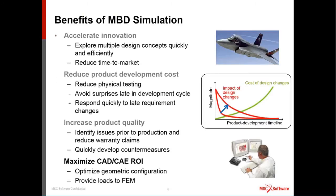Multi-body dynamic simulation helps engineers working at corporations like Ford, Ferrari, or Volvo. It definitely accelerates innovation — they're able to look at more design concepts earlier in the development process, which helps reduce time to market. One of the biggest benefits is reducing physical testing costs and avoiding surprises later in the development cycle. Many companies are significantly increasing product quality and reducing warranty costs as a result.